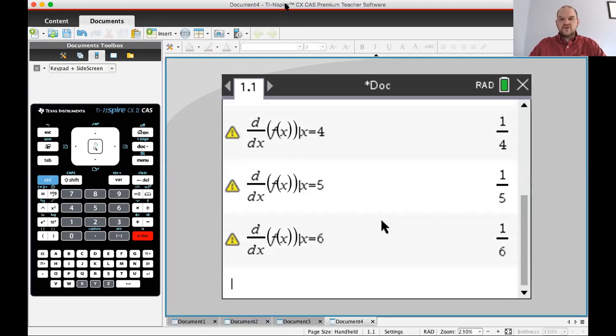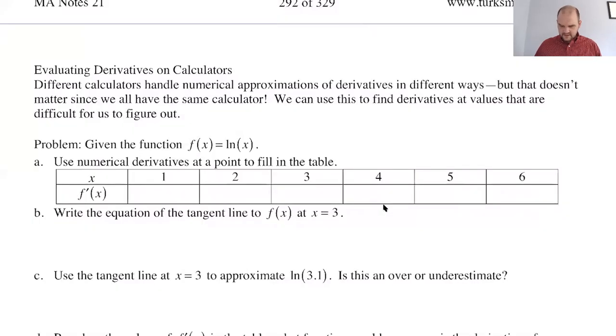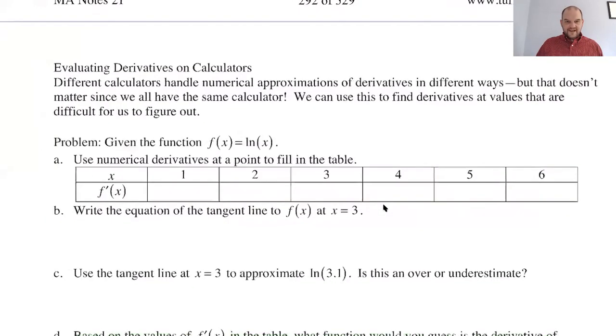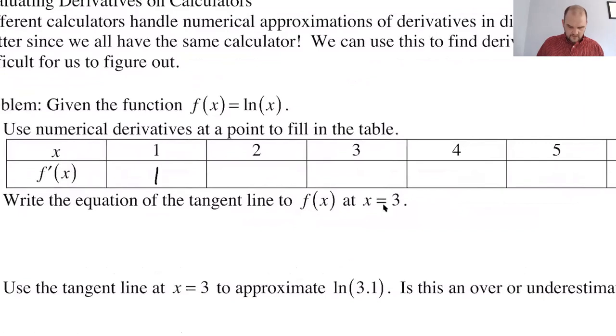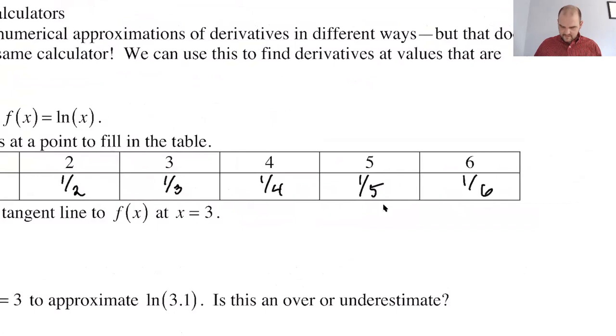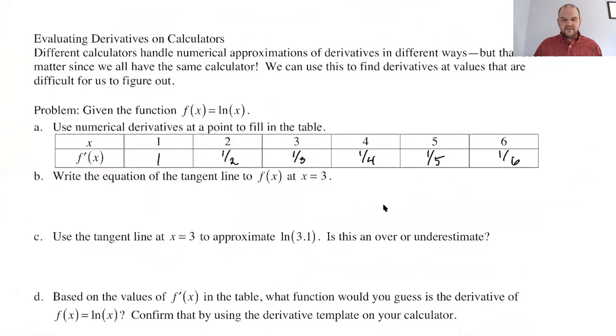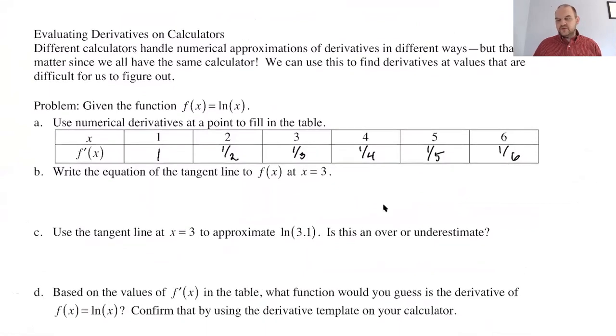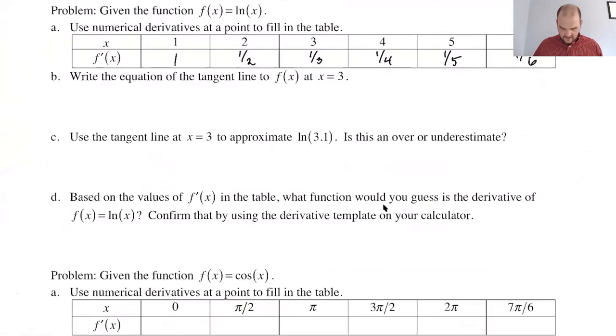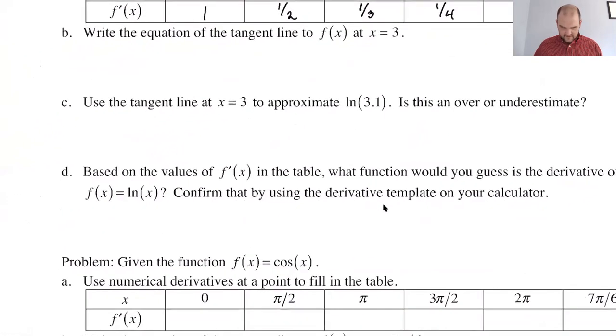Let's go back to the notes and fill those in. It looks like whatever x is, I'm going to say this is one, one-half, one-third, one-fourth, one-fifth, and one-sixth. It kind of looks like the derivative of natural log of x is probably one over x.